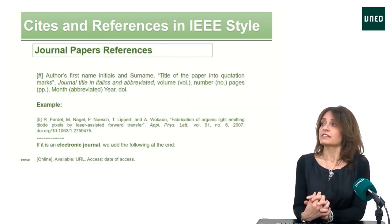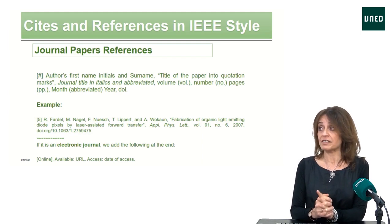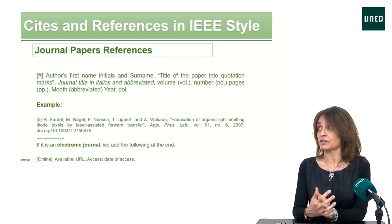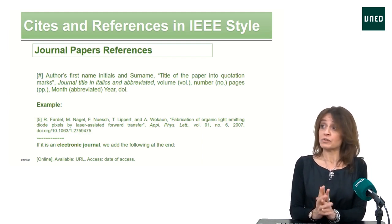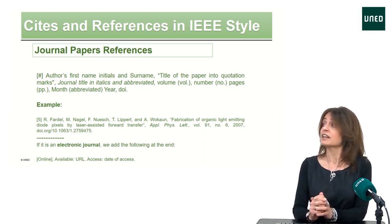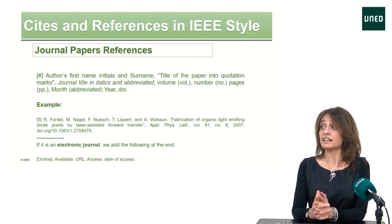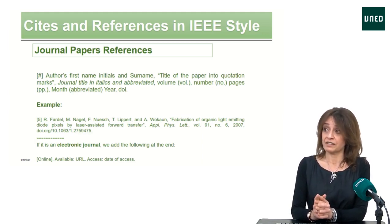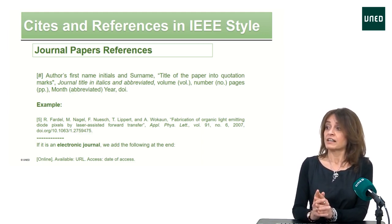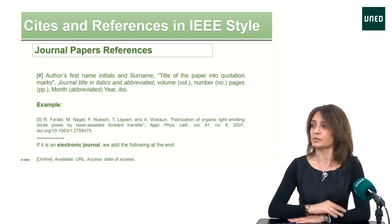If we are citing journal papers, as always in IEEE style: the author's initials and surname complete, the title of the paper in quotation marks, the journal title in italics and abbreviated — that is important — the volume, the number, the pages, the month abbreviated as well, the year, and its DOI if it exists. There is an example for you to see it better.